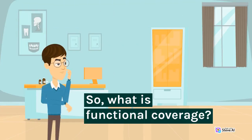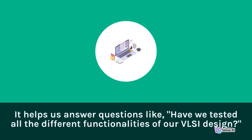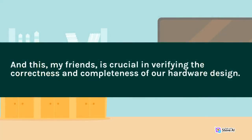So, what is functional coverage? In a nutshell, functional coverage is a metric used in hardware verification to ensure that the design under test, or DUT, has been thoroughly exercised during simulation. It helps us answer questions like, have we tested all the different functionalities of our VLC design? Or how much of our code has been tested? And this is crucial in verifying the correctness and completeness of our hardware design.